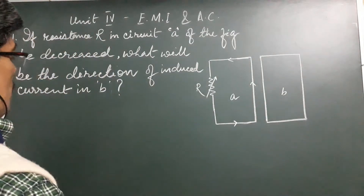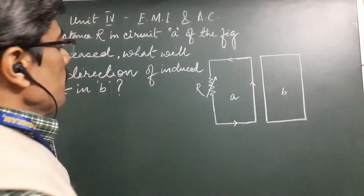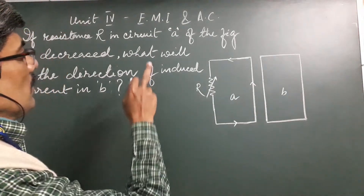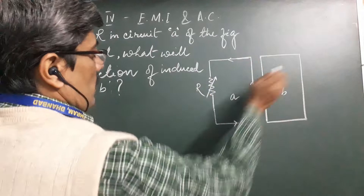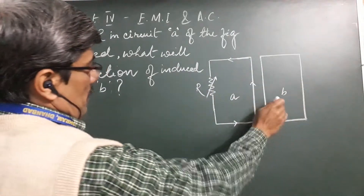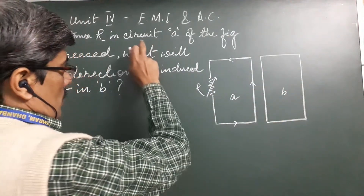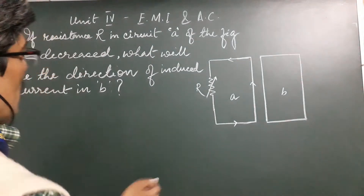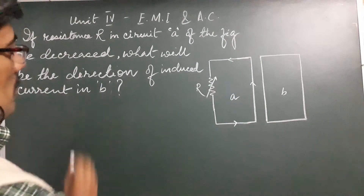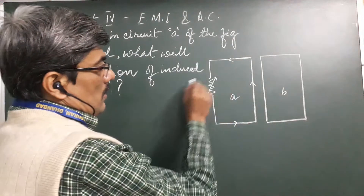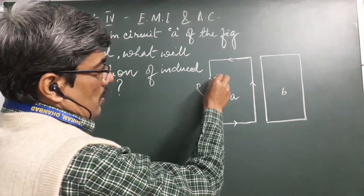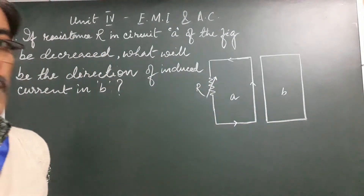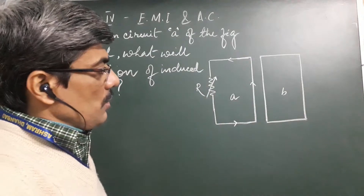The first question today: if the resistance R in circuit A — there are two parts of this diagram, A and B — in circuit A of the figure be decreased, what will be the direction of induced current in B? Here you have been given a resistor which is variable in nature, meaning the value of this resistance can be changed.